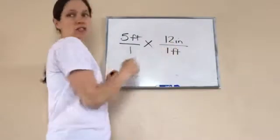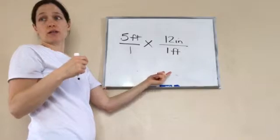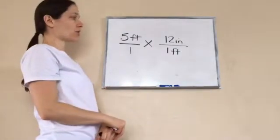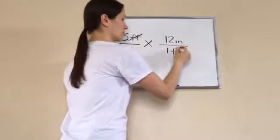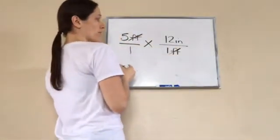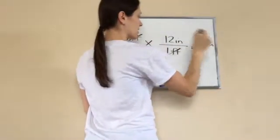So, can anything cross out? Feet. Feet. Very good. So, basically, it's going to be 12 times 5, which is 60 inches. So, if I had 12 inches in a foot, and I had 5 foot of it, how many inches would I have? 60. Very good.